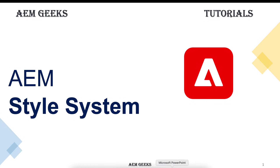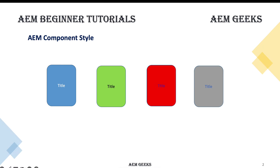In this tutorial I'll talk about the AEM style system. Let's say I have a component and I need a different background color and text color on a different page. How it's generally achieved is we add a dropdown in a dialog with different styles, and on a particular page we choose a particular style. But this is not a standard solution — any project can have a different implementation, and tomorrow another project can have checkboxes instead of a dropdown.